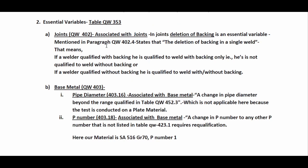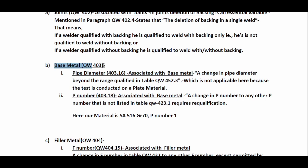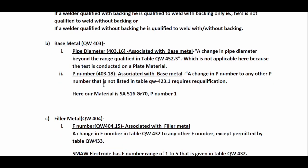The second essential variable is pipe diameter, associated with the base metal and given in paragraph QW403 of ASME Section 9, which states that a change in pipe diameter beyond the range qualified in table QW452.3 requires requalification. This is not applicable here because the test was conducted on a plate material — SA516 Grade 70 is a plate material, so this parameter is not applicable. The second essential variable associated with base material is the P number, given in QW403.18 of Section 9.